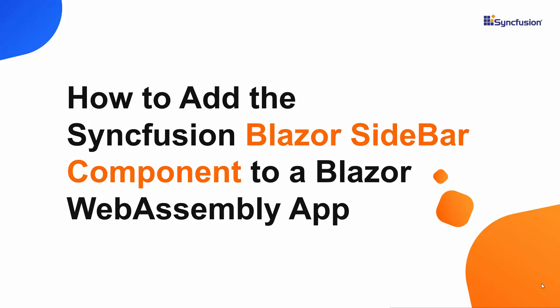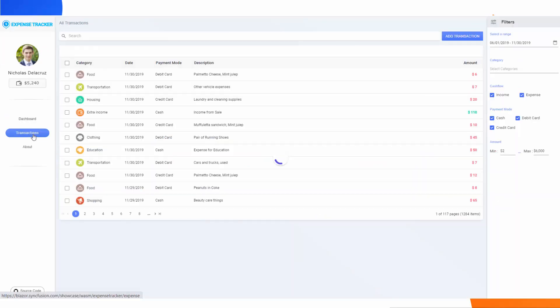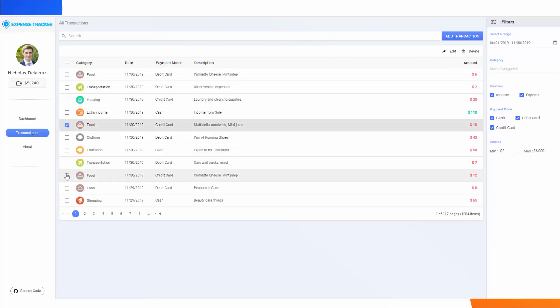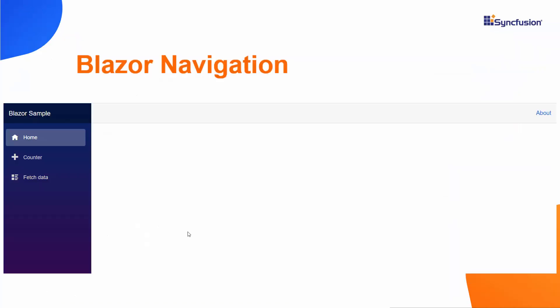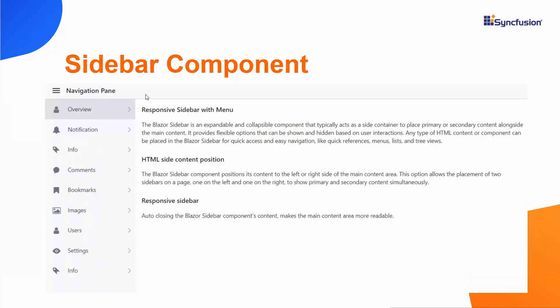Hi everyone, welcome to this video on how to get started with the Blazor sidebar from Syncfusion. Almost every application needs a navigation system to make moving through the app easy. For some apps, multi-level menus may be required to organize navigation for end-users. Though Blazor has default navigation, you can replace it with our Blazor sidebar component that includes a rich set of features and allows you to place primary and secondary content alongside the main app content.